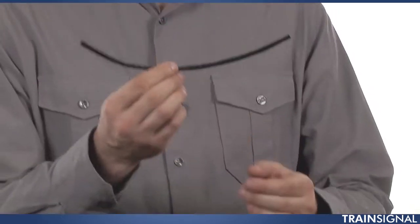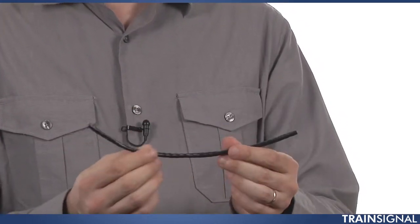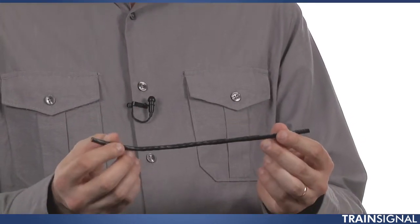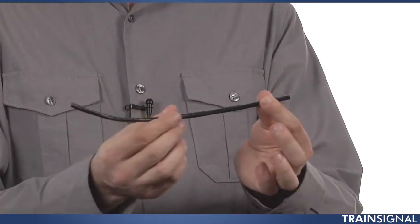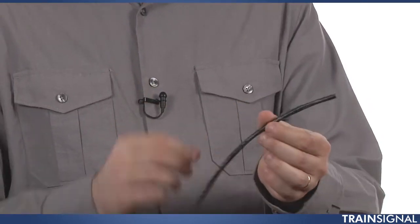All right, so as you can see here, I have a number of supplies so that we can go ahead and learn how to terminate a twisted pair cable. The first item that I have here is a cable, and I will tell you that this is obviously just a small little piece of a cable that I've cut out for the purposes of demonstrating.